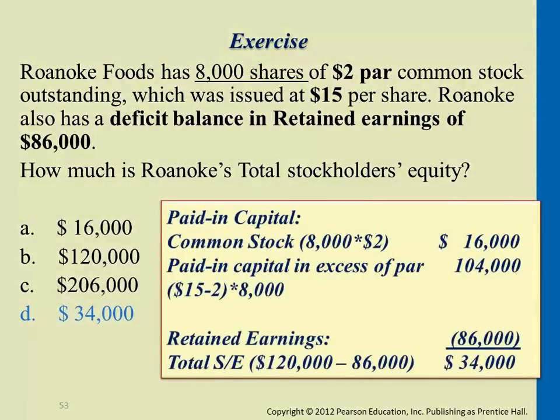You would have common stock: 8,000 times $2, which is the par value amount. Then you have paid-in capital in excess of par value, $104,000. And the retained earnings has a negative balance, so it's a deduction account for the entire equity section.